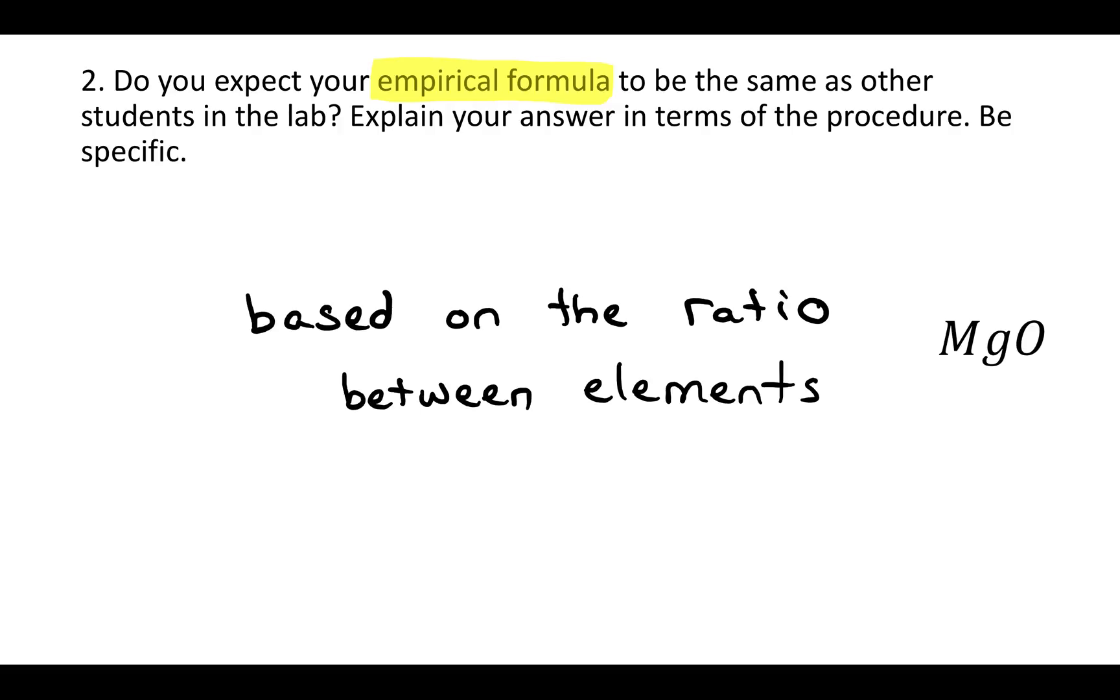Let's say that you got a ratio of one to one, one magnesium for every one oxygen. So that would be, if that's the ratio you got, that would be the empirical formula for that compound, magnesium oxide. Now no matter how much sample you would take, a compound is always going to be the same.